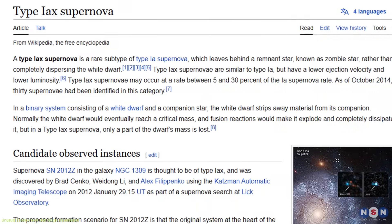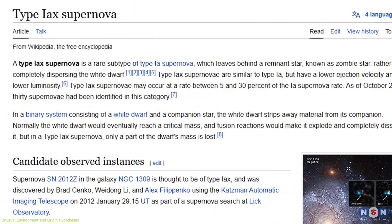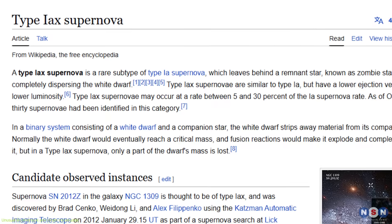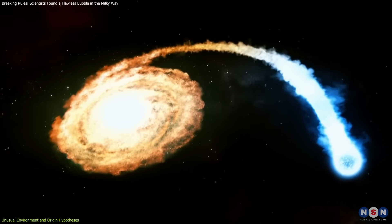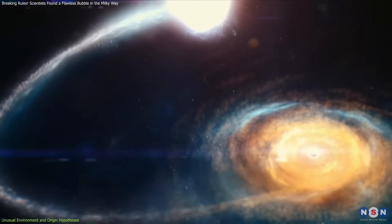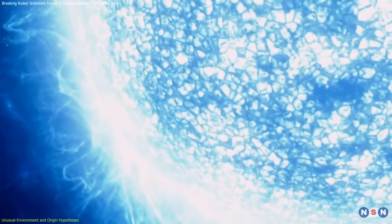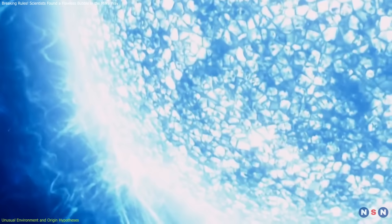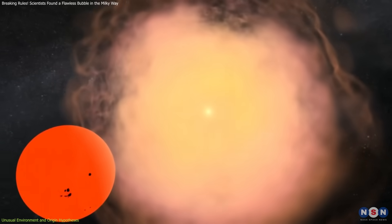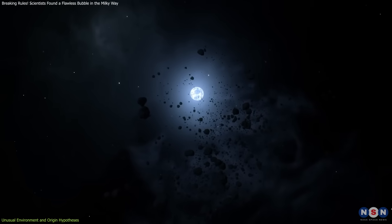One hypothesis is that Teleos resulted from a Type Iax supernova, a subclass of the better-known Type Ia. These explosions involve a white dwarf in a binary system gradually pulling material from a companion star. In a Type Iax event, the white dwarf doesn't fully disintegrate. Instead, it partially explodes and leaves behind a surviving core, sometimes referred to as a zombie star.